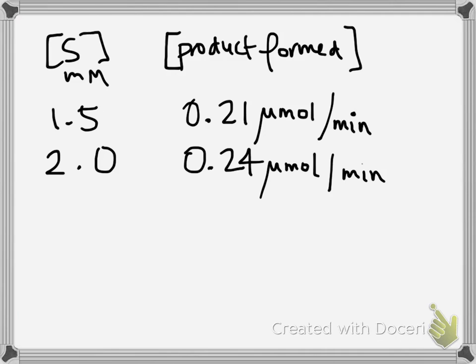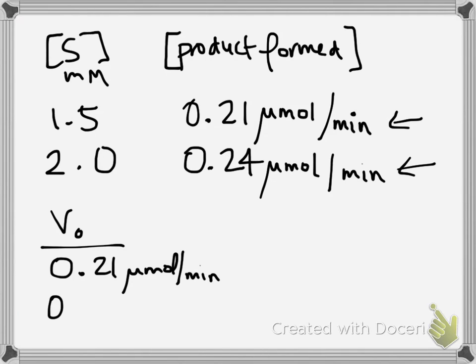So these numbers here provide the initial velocity for you. So if you make 0.21 micromole per minute that's your initial velocity. Likewise 0.24 micromole per minute.